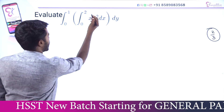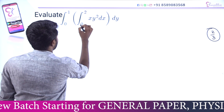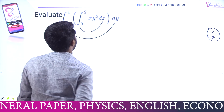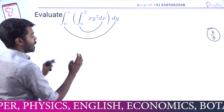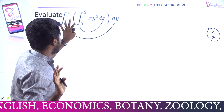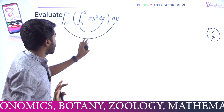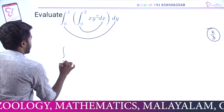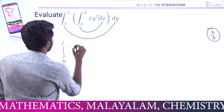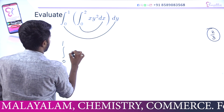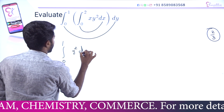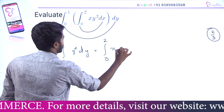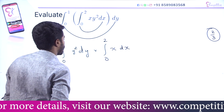What we need to do is simple. When the limit is related to dx and the limit is related to dy, we separate them. That is: integral 0 to 1 of y² dy, multiplied by integral 0 to 2 of x dx.